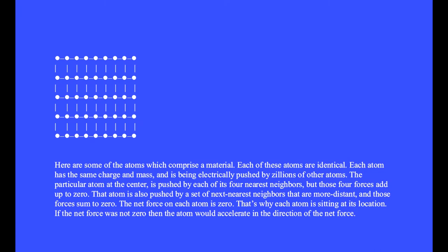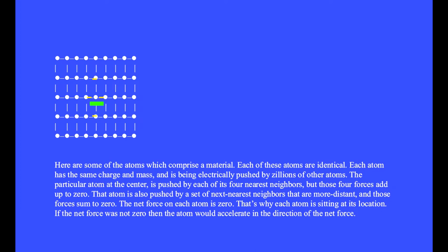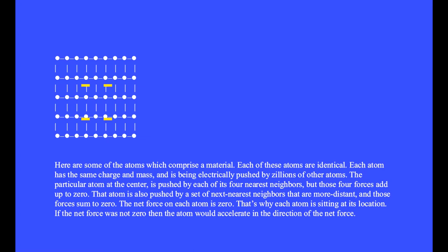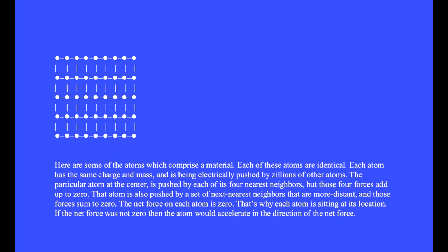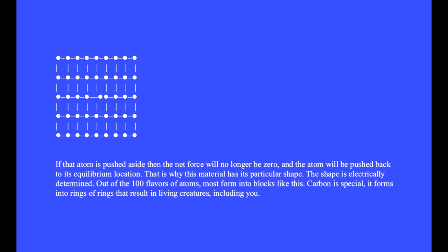Within a material, the net electrical force on each atom is zero. The particular atom at the center is pushed by each of its four nearest neighbors, but those four forces add up to zero because each of the four atoms are equally distant. The net force on each atom is zero — that's why each atom is sitting at its location. If the net force was not zero, the atom would accelerate in the direction of the net force. If that atom is pushed aside, the net force will no longer be zero and the atom will be pushed back to its equilibrium location. That is why the material has its particular shape. The shape is electrically determined.